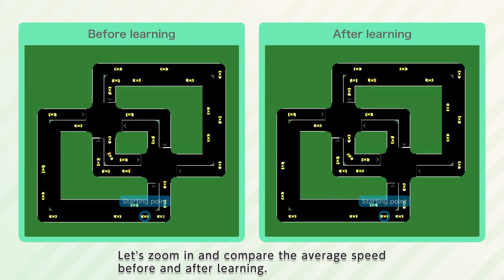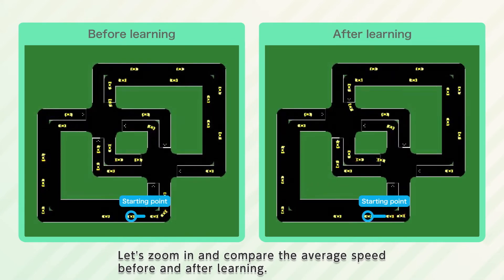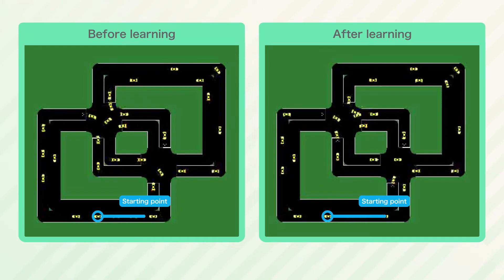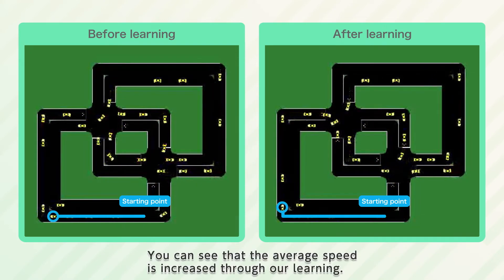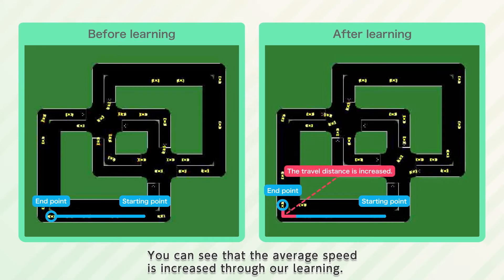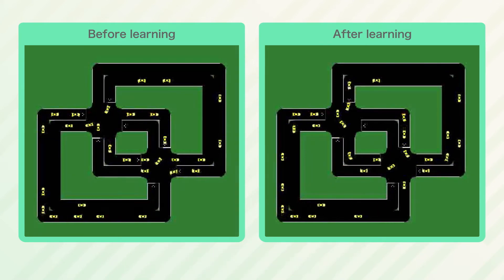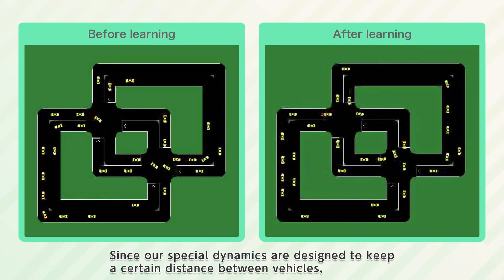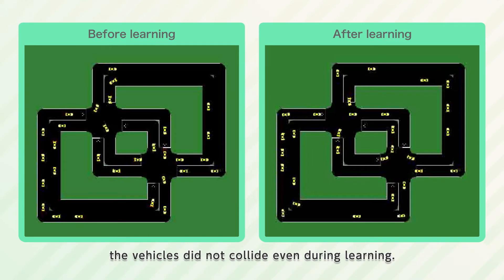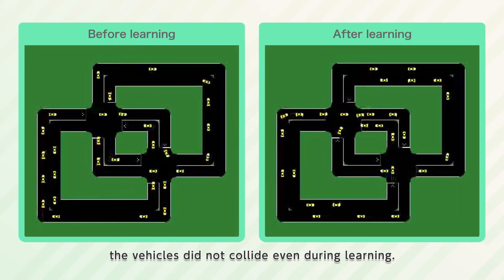Let's zoom in and compare the average speed before and after learning. You can see that the average speed is increased through our learning. Since our special dynamics are designed to keep a certain distance between vehicles, the vehicles did not collide even during learning.